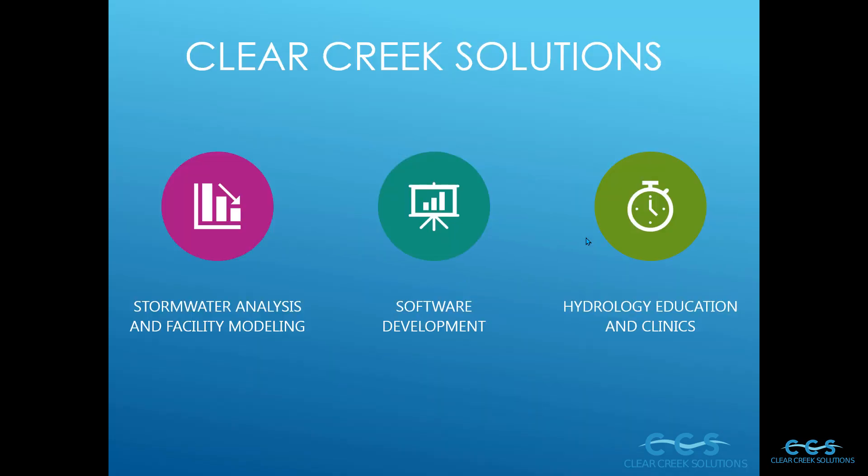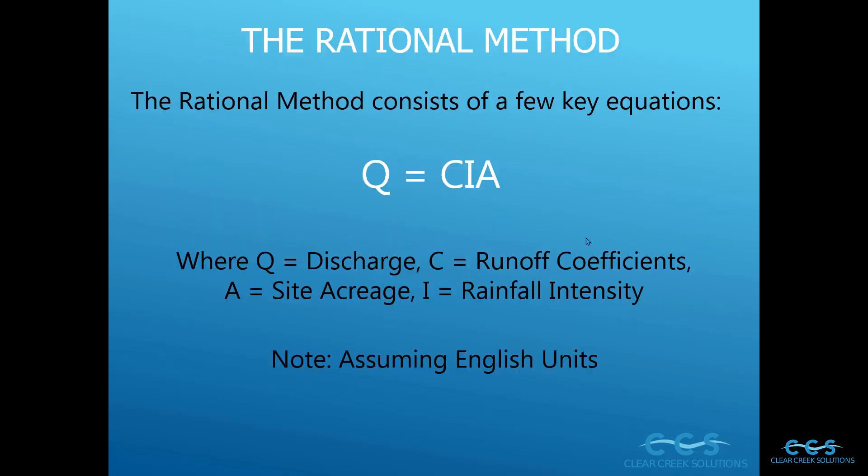I am your instructor. Clear Creek Solutions does software development, hydrology education in clinics such as these hydrology education videos, as well as projects involving stormwater analysis and facility modeling. Let's review the rational method real quick: Q equals CIA, that basic equation where Q equals discharge, C equals runoff coefficient, A equals site acreage, and I equals rainfall intensity.